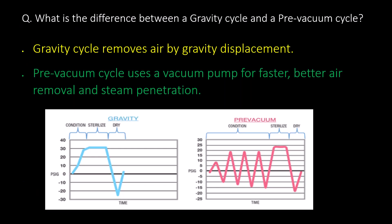What is the difference between a gravity cycle and a pre-vacuum cycle? A gravity cycle removes air by gravity displacement, while a pre-vacuum cycle uses a vacuum pump for faster and better air removal and steam penetration.